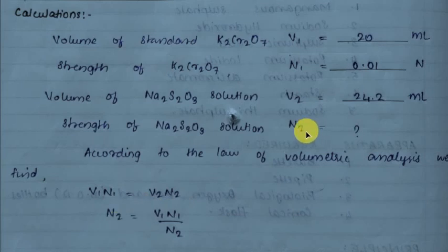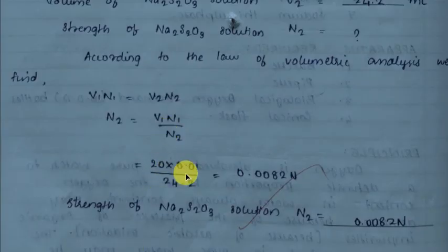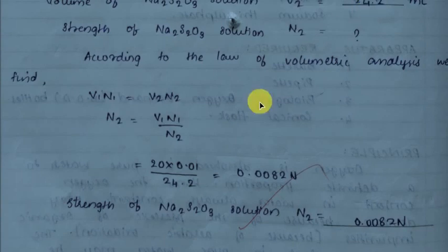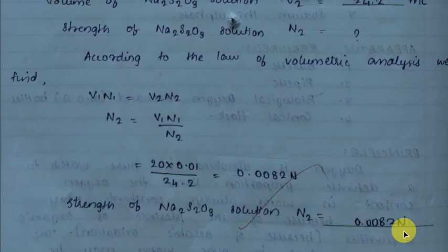Strength of sodium thiosulfate N2 = (20 × 0.01) / 24.2 = 0.0082 N (normality). This is the result from Titration 1.